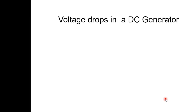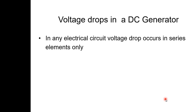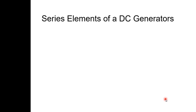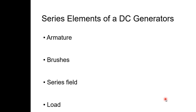Now we will see the voltage drops in a DC generator. In any electrical circuit, voltage drop occurs in series elements only — remember this. In a DC generator, the series elements available are: armature, brushes, series field, and load.